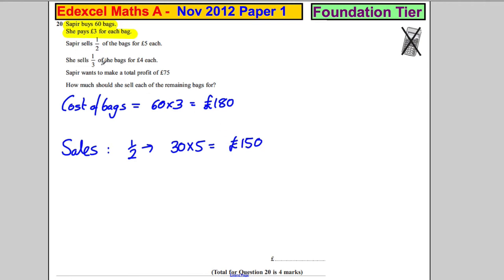She then sells a third of the bags for four pounds each. A third. Now, a third of 60 is 20. So she sells 20 of the bags for four pounds each, which is equal to 80 pounds.